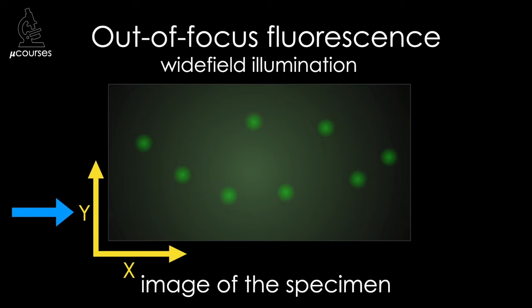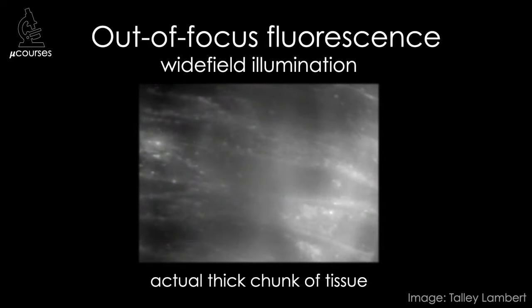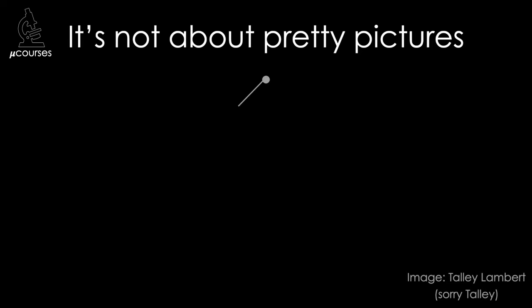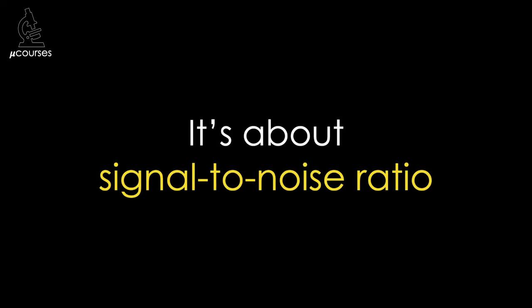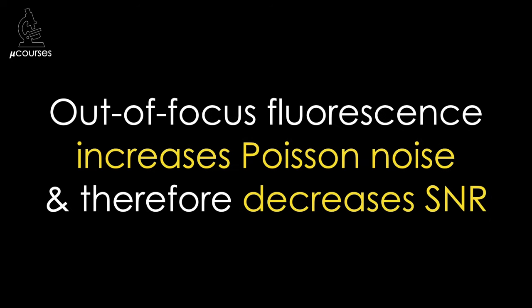Background fluorescence reduces contrast of the image, arguably making it not as pretty. But we aren't artists, we're scientists. And so we're concerned about out-of-focus fluorescence because it can reduce the signal-to-noise ratio of the image. This can occur because out-of-focus fluorescence contributes Poisson noise to the image, which decreases signal-to-noise ratio.